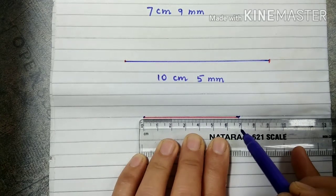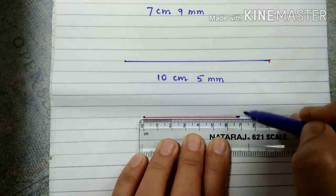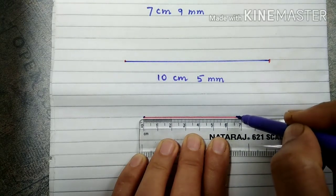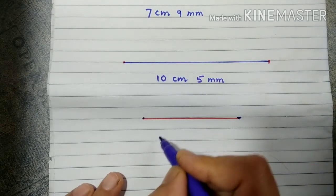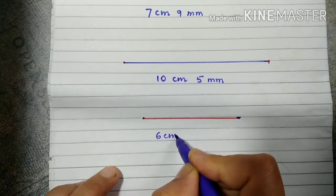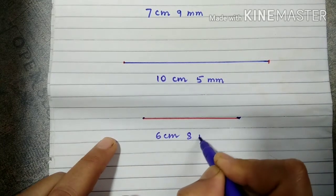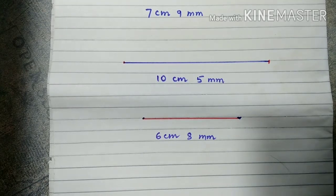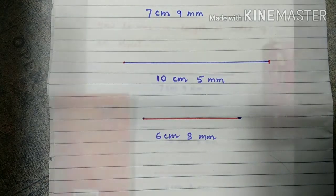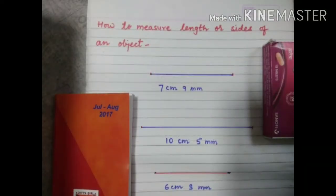Let's measure from zero on the scale: 1, 2, 3, 4, 5, 6 — it is not exactly seven, it is between 6 and 7 centimeters. After 6, there are 8 small parts, so the length of this side is 6 centimeters and 8 millimeters. These are the lengths of the sides of the objects we have measured.